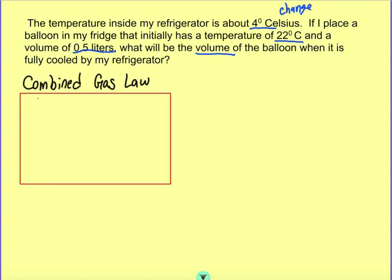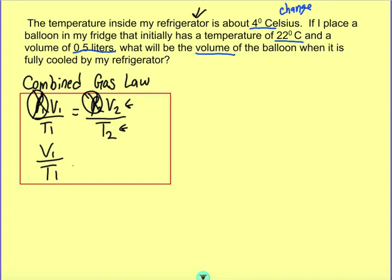The combined gas law is P1V1 over T1 equals P2V2 over T2. This problem only has temperature and volume, though. It doesn't say anything about the pressure. But we know that a refrigerator is not a vacuum. The pressure does not change when you go inside the refrigerator. So we know that P is going to be constant. We don't need it in our equation. The combined gas law then becomes V1 over T1 equals V2 over T2. If the pressure is the same on both sides, we don't need to worry about it.